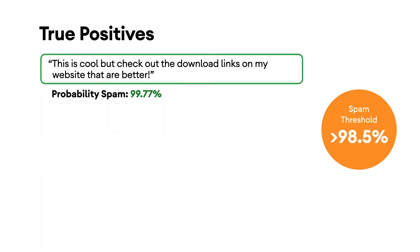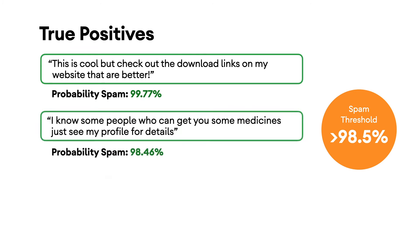Here we have some true positives — spam comments that were correctly identified as spam. If you had not changed the threshold in the prior section, these would have been classified as intended. However, because you changed the threshold to 98.5%, you can see that two of these are now treated as non-spam, which is incorrect.